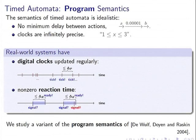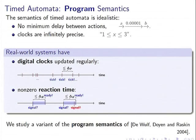In reality we have digital clocks, so we can only measure time with clock ticks — a small but positive period. We also have reaction times: when the system receives a signal or interrupt, it has to spend a little time treating the signal. The program semantics was defined by Wulf et al. to take these aspects into account. Think of it as a very concrete semantics — the real-world behavior of a digital system executing the timed automaton.